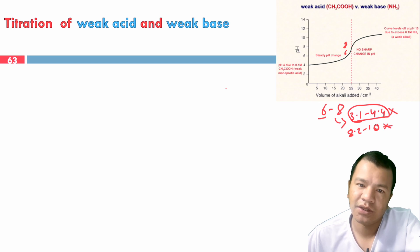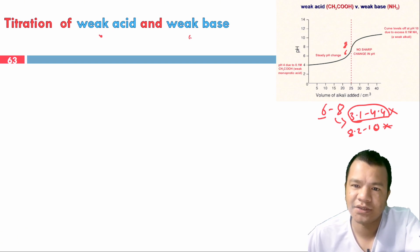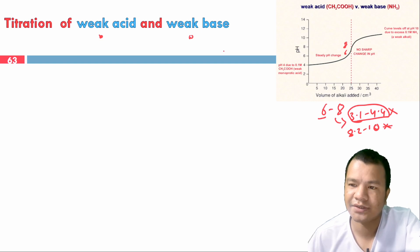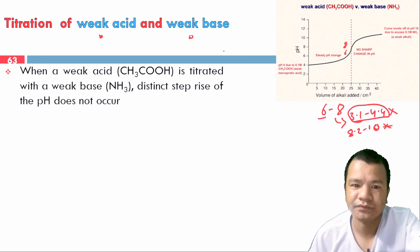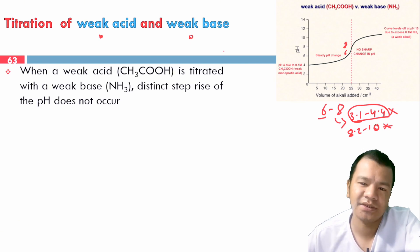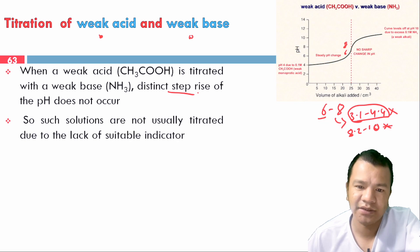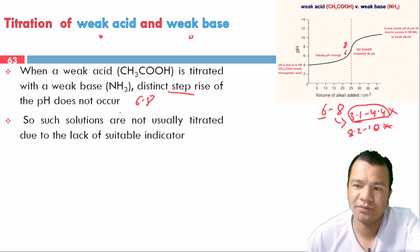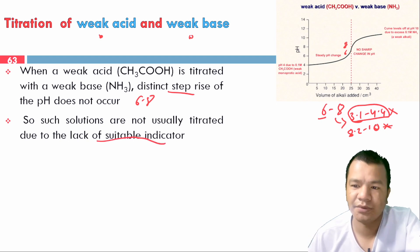For weak acid versus weak base titration, the steep pH rise is very small, approximately pH 6 to 8. If no indicators have a suitable pH range in this narrow region, then the solution cannot be accurately titrated due to the lack of suitable indicators.